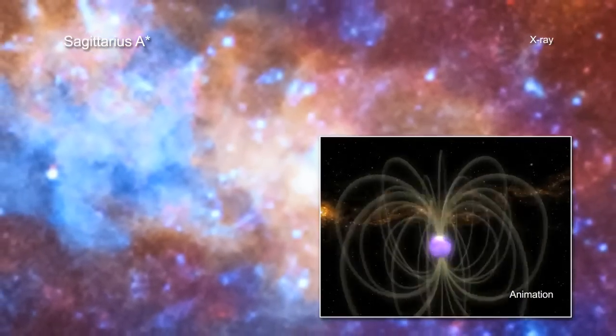The other proposed explanation involves the strong magnetic fields that exist around Sagittarius A-star. If the magnetic field lines reconfigure themselves and reconnected, this could also create a large burst of X-rays.